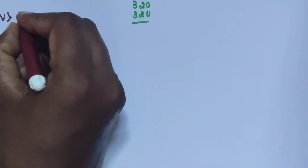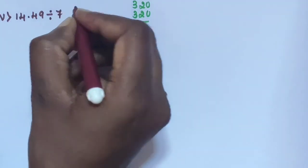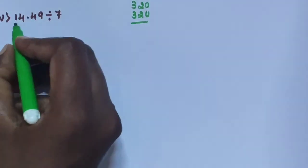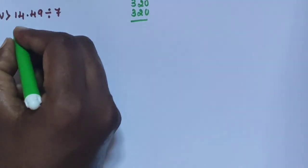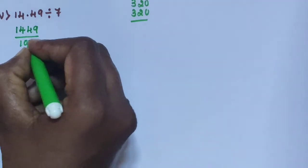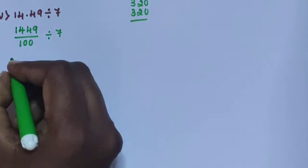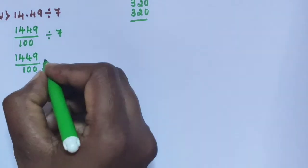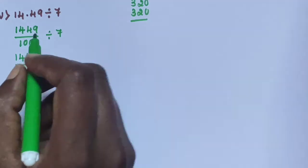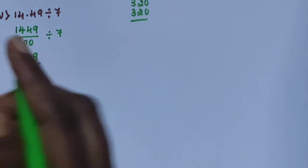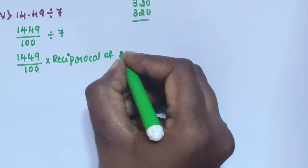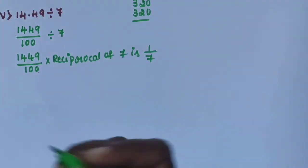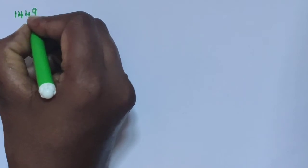Sub question 5: 14.49 is divided by 7. Using the same process, 14.49 — 4 is in the 10th place, 9 is in the 100th place, so divide by 100. Write as 1449 divided by 100, then divide by 7. The division sign can be removed using a reciprocal of fraction. The reciprocal of 7 is 1 by 7.